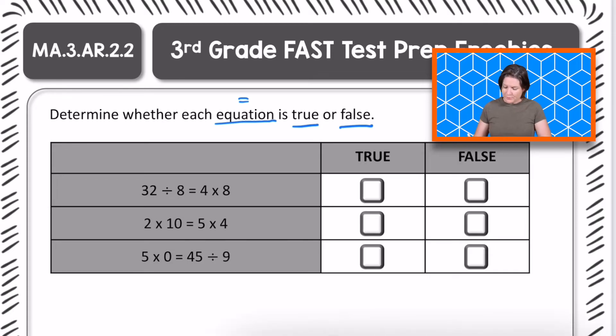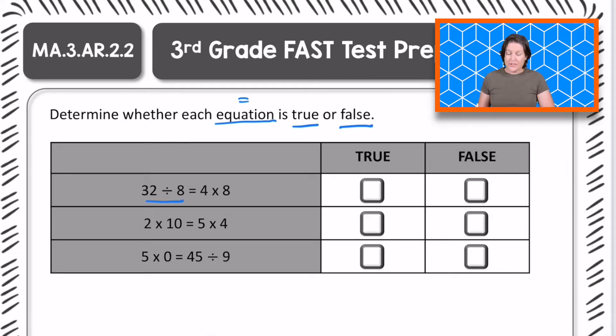Okay, so you can help me out with this one. We've got this side over here. It says 32 divided by 8. 32 divided by 8 is what? 4, right? Good. And on this side, 4 times 8 equals what? 32. Now is 4 equal to 32? No, right? That is not true, which means we need to select which one. True or false? False. Very good.